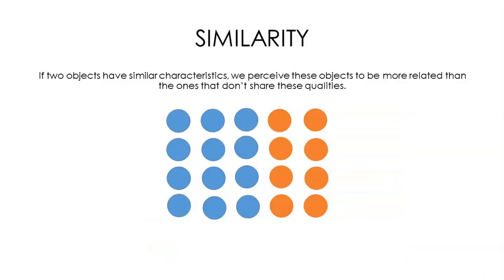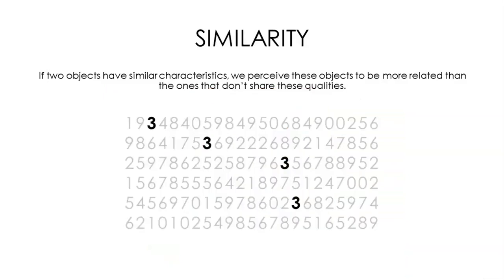The principle of similarity says that if two objects have similar characteristics, we perceive them to be more related than ones that don't share those characteristics. Here we see two groups of circles — a blue group and an orange group. Back to our threes: here we don't have the principle of proximity, as the threes are all spread out, but there's a dark black group and a light gray group, and they're quickly and easily separated and associated together.